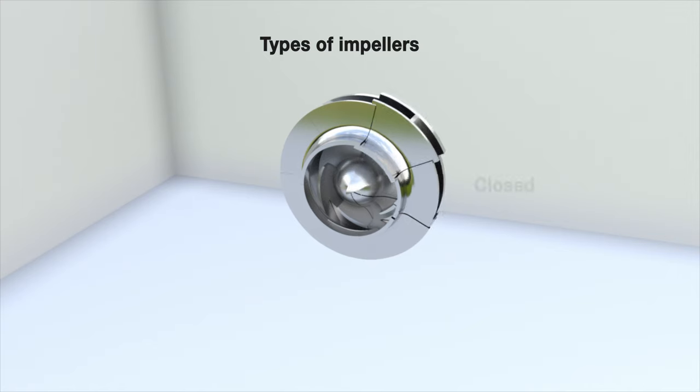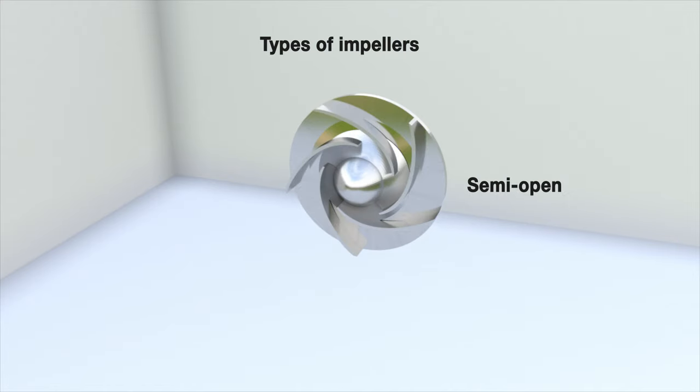Three main types of impellers are used in centrifugal pumps. Closed with back and front discs, vanes and fairings. Semi-open with the vanes free on the front side. Open with the vanes free on both sides.